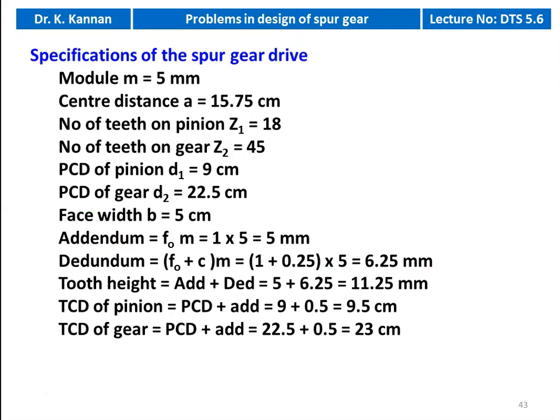Specifications of the spur gear drive: module = 5 mm, center distance = 15.75 cm, number of teeth on pinion Z1 = 18, number of teeth on gear Z2 = 45, PCD of pinion D1 = 9 cm, PCD of gear D2 = 22.5 cm, face width = 5 cm, addendum = 5 mm, dedendum = (1 + 0.25) × 5 = 6.25 mm, tooth height = 5 + 6.25 = 11.25 mm, tip circle diameter of pinion = 9 + 0.5 = 9.5 cm, tip circle diameter of gear = 22.5 + 0.5 = 23 cm.